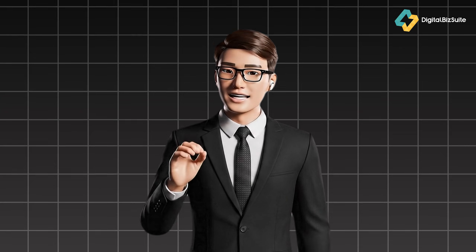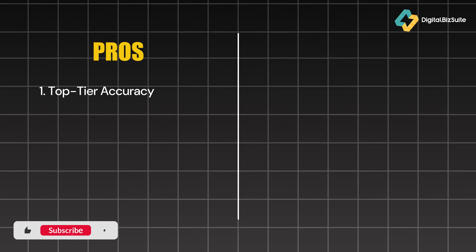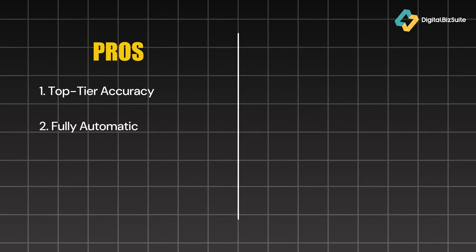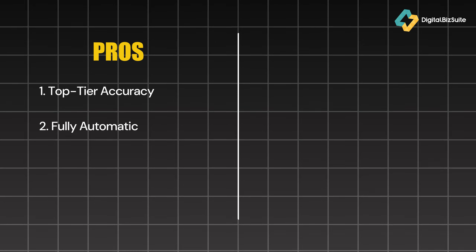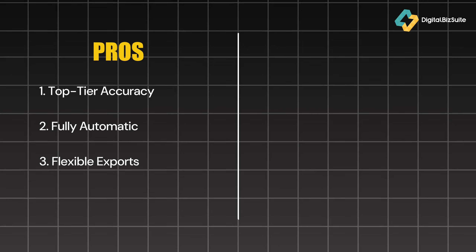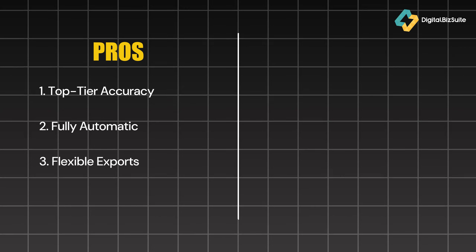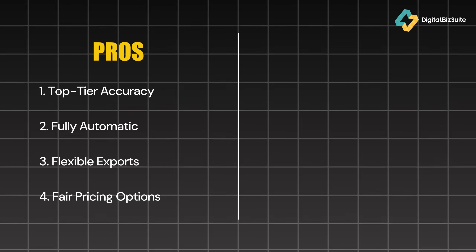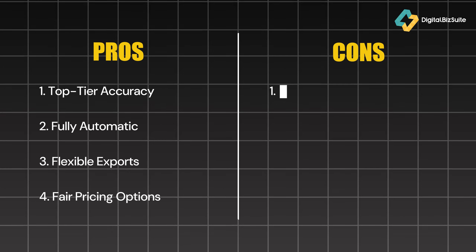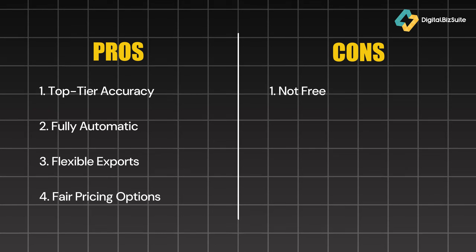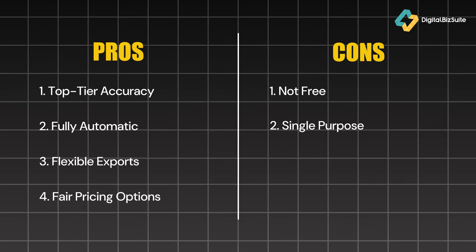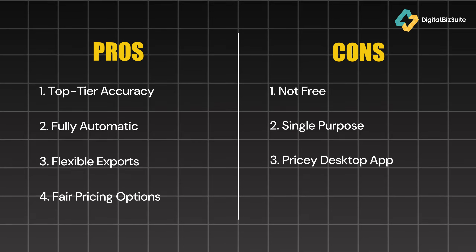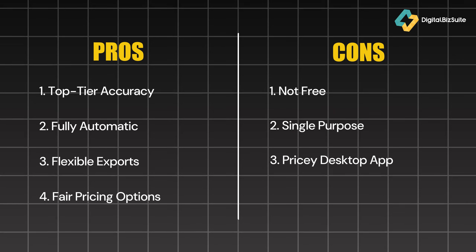After putting Vector Magic through its paces, here's what stands out. Pros: top-tier accuracy — delivers the cleanest, most precise vectors; fully automatic — upload and done, the defaults just work; flexible exports — supports SVG, EPS, PDF, plus AI and DXF on desktop; fair pricing options — choose between a subscription or one-time license. Cons: not free — you'll need a paid plan to export final files; single-purpose — strictly image to vector, no design tools; pricey desktop app — $295 is steep, but fair for frequent users.